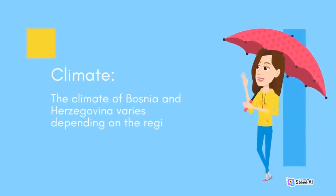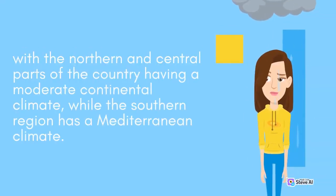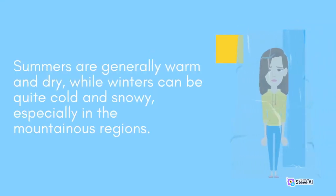The climate of Bosnia and Herzegovina varies depending on the region, with the northern and central parts of the country having a moderate continental climate, while the southern region has a Mediterranean climate. Summers are generally warm and dry, while winters can be quite cold and snowy, especially in the mountainous regions.